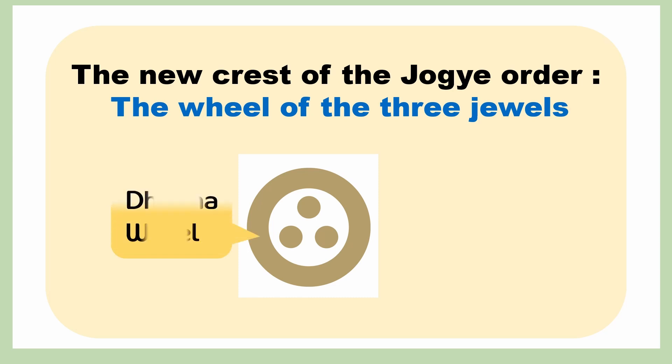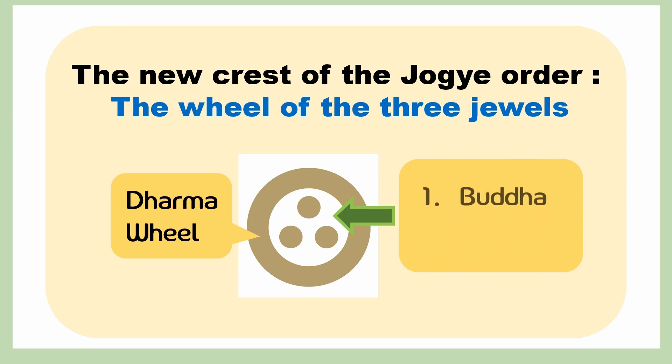The outer circle means the Dharma wheel. The three dots inside the circle represent the three jewels of Buddhism: first, the Buddha; second, the Dharma, Buddha's teaching; and third, the Sangha, the Buddhist community.